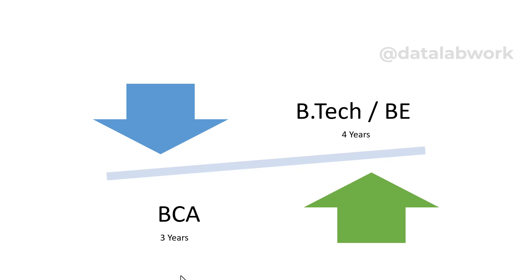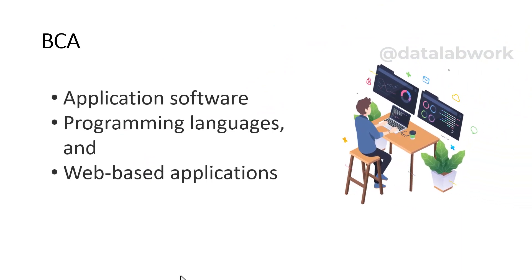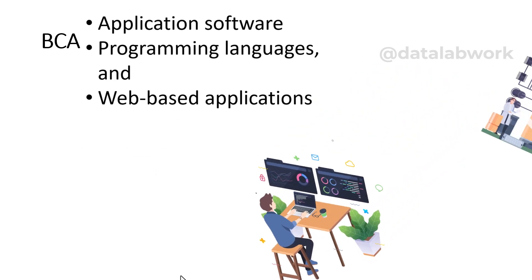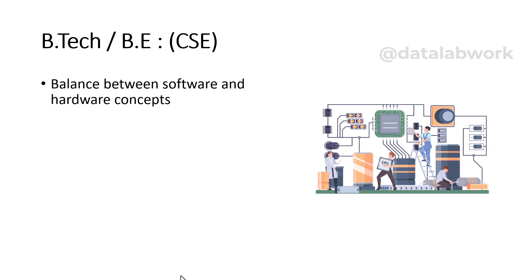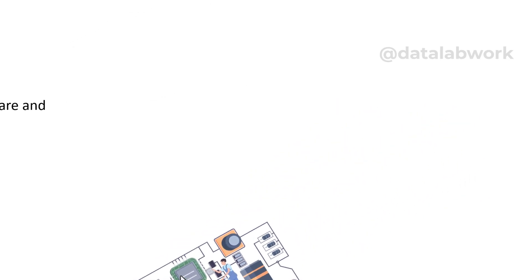On the other hand, the Bachelor of Technology or Bachelor of Engineering in Computer Science, abbreviated as BTech or BE, is a four-year program. This course not only covers the software aspects but also gives a detailed understanding of hardware components, providing a broader perspective encompassing fields like operating systems, computer architecture, and data science. BCA focuses more on application software, programming languages, and web-based applications — it is more software-centric — while BTech/BE offers a balance between software and hardware concepts, covering both aspects of computer systems.